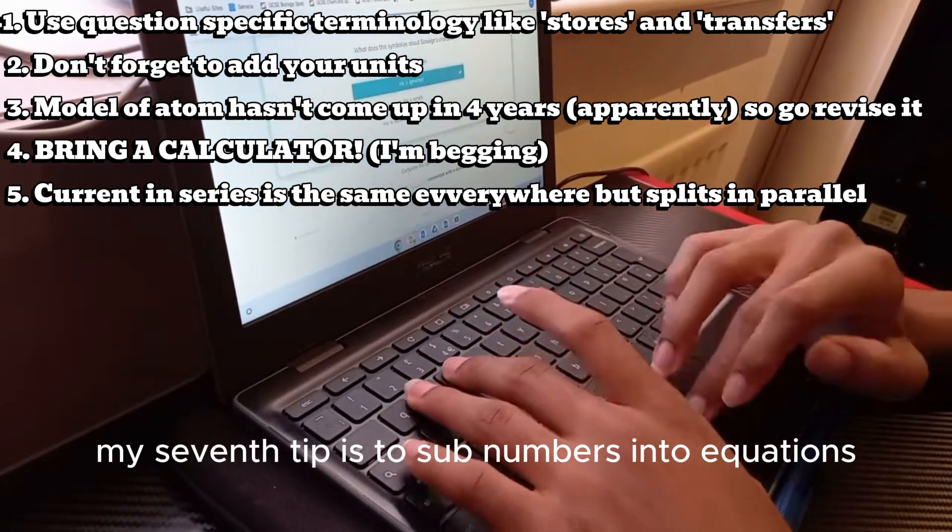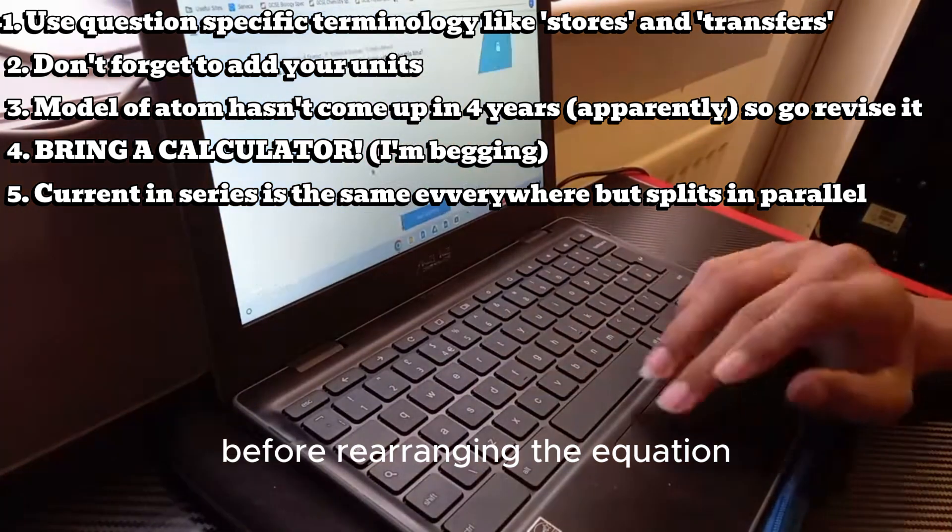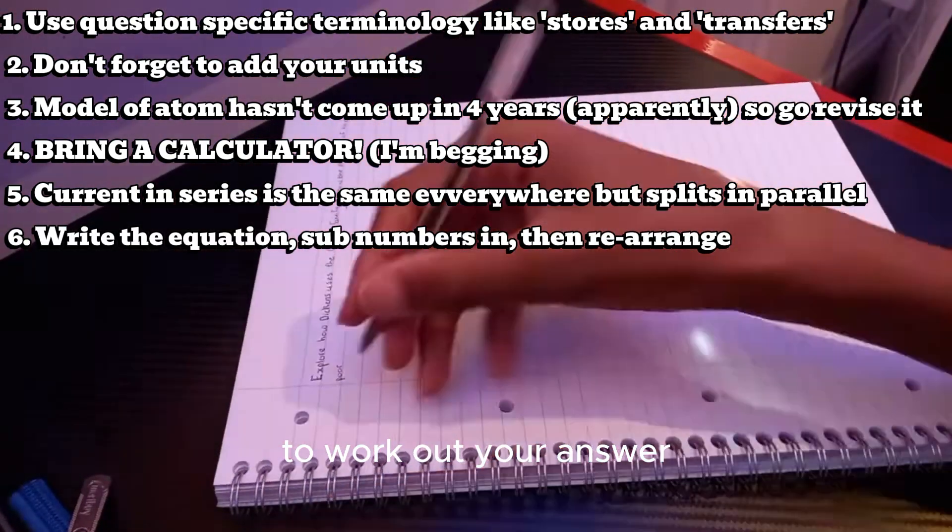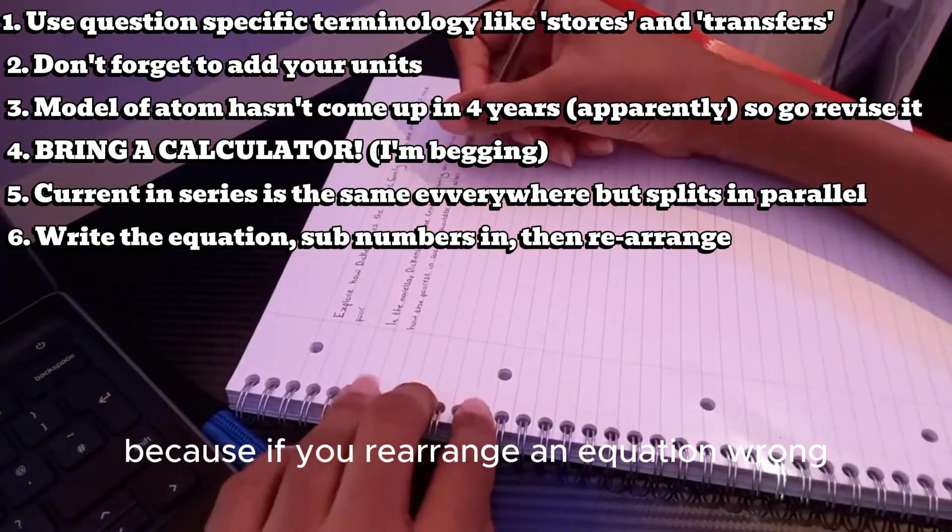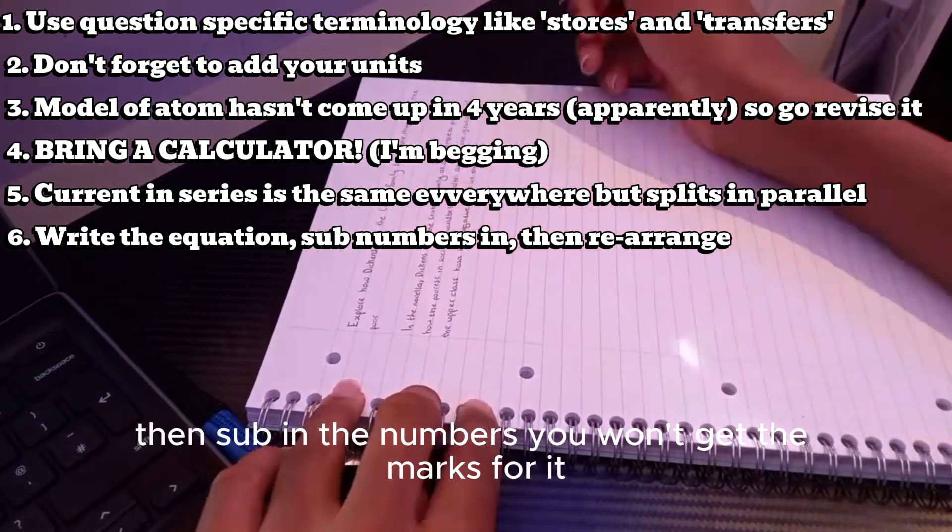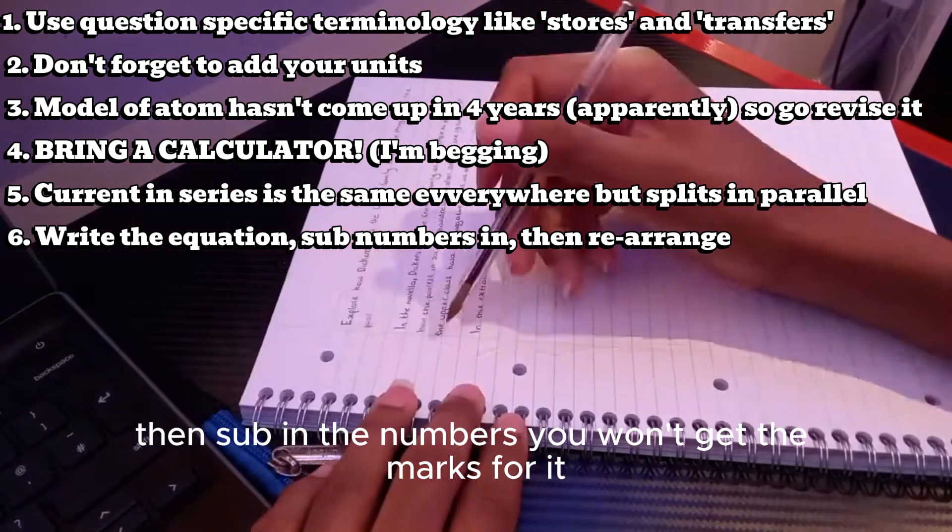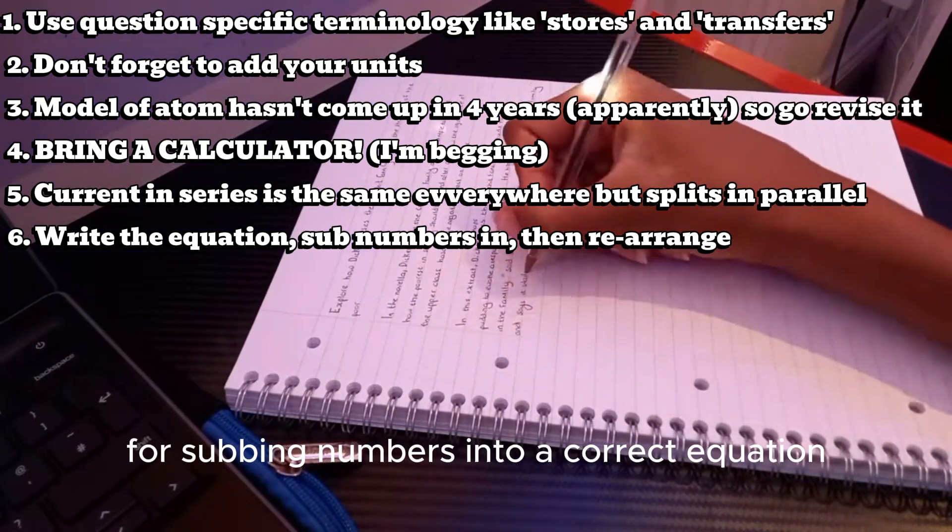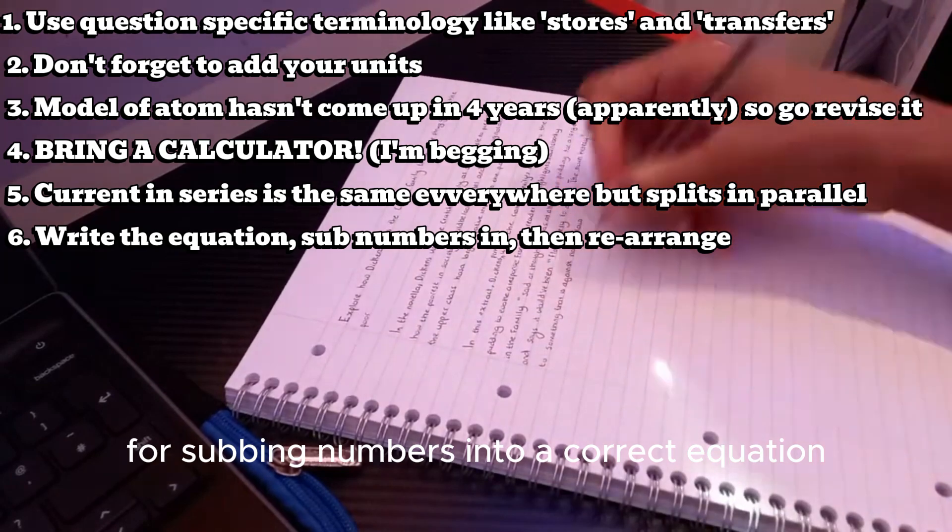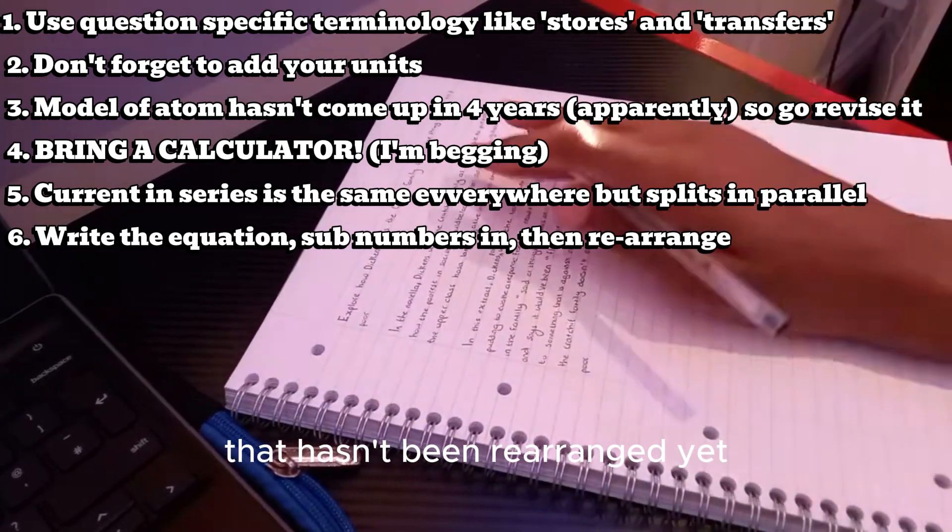My seventh tip is to sub numbers into equations before rearranging the equation to work out your answer. Because if you rearrange an equation wrong, then sub in the numbers, you won't get the marks for it if you are wrong in the end. But you'll still get marks for subbing numbers into a correct equation that hasn't been rearranged yet.